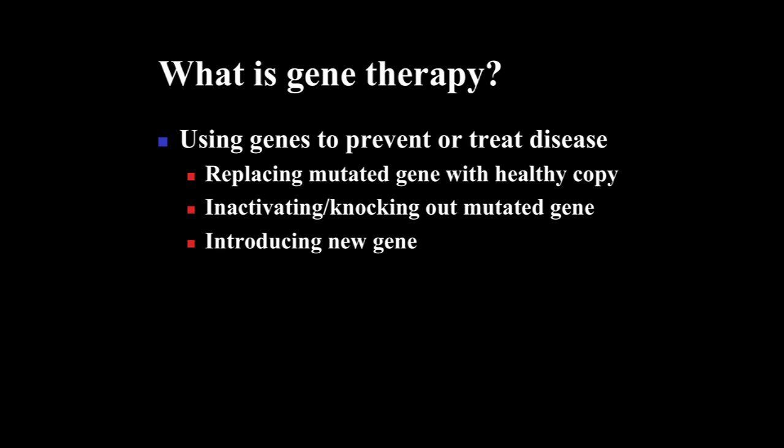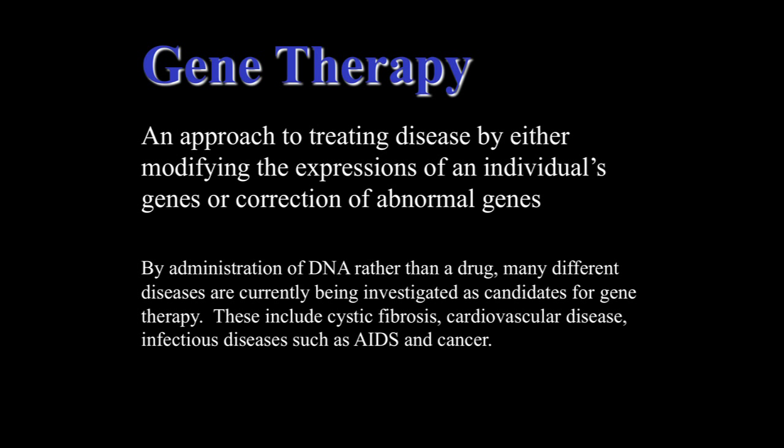We also touched on the ability to genetically engineer stem cells and how this coincides in parallel with the ability to clone and genetically engineer animals. In gene therapy, the notion set out right away was using genes therapeutically to prevent or treat disease. This could be accomplished by replacing a mutant gene with a healthy copy, inactivating or knocking out a mutant gene, or introducing a new gene to replace a defective one — an approach to treating disease by modifying gene expression or correcting abnormal ones.